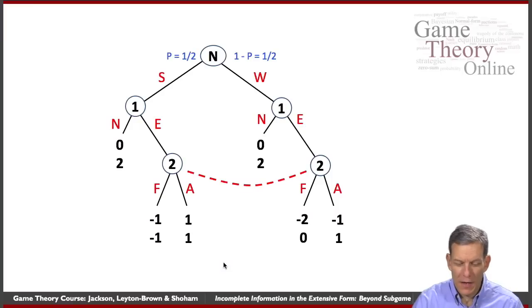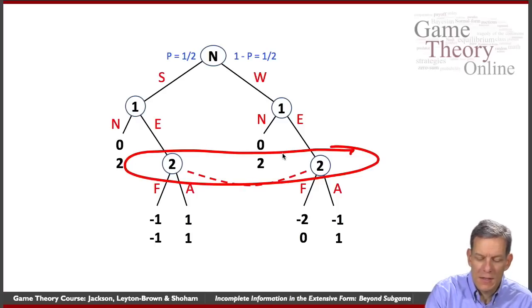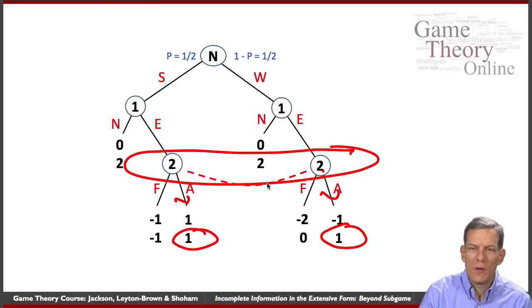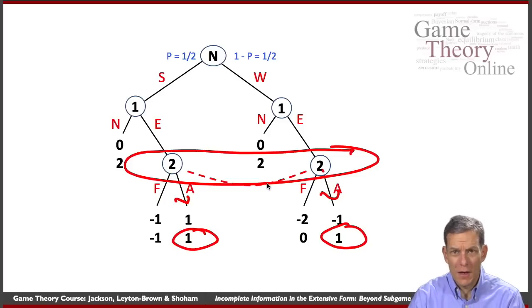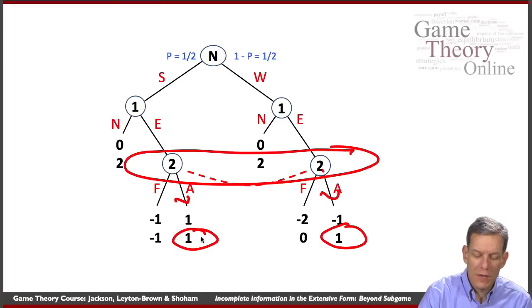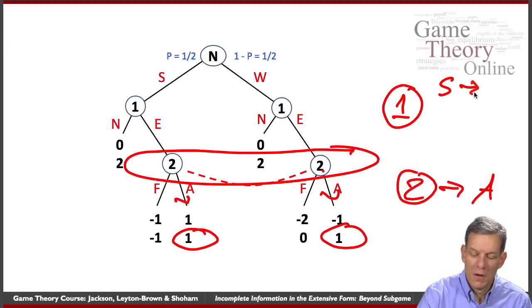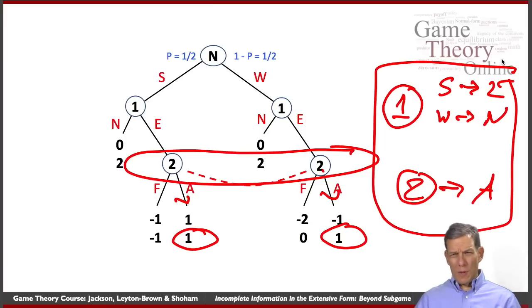So if we look at this game again and we require that players have beliefs at different information sets. So here, what we would have to have is now player two has to say, what's the probability that I'm here? What's the probability that I'm here? So they have some beliefs. But notice in this game, no matter what those beliefs are, they should always acquiesce. So once we give player two beliefs here and say they have to best respond to their beliefs in any node where they have beliefs, then that ties down and says player two has to acquiesce. Then for player one, if player two is acquiescing, player one is strong, they should definitely enter. If player one is weak, they should definitely not enter. So we end up with a unique prediction in this game, whereas with subgame perfection there were many.